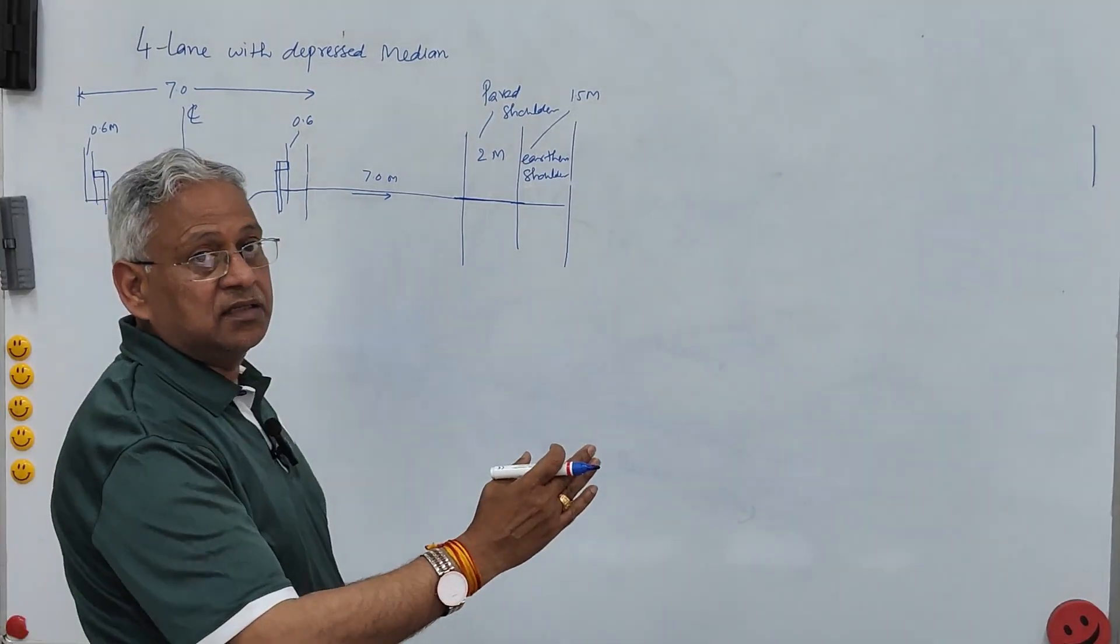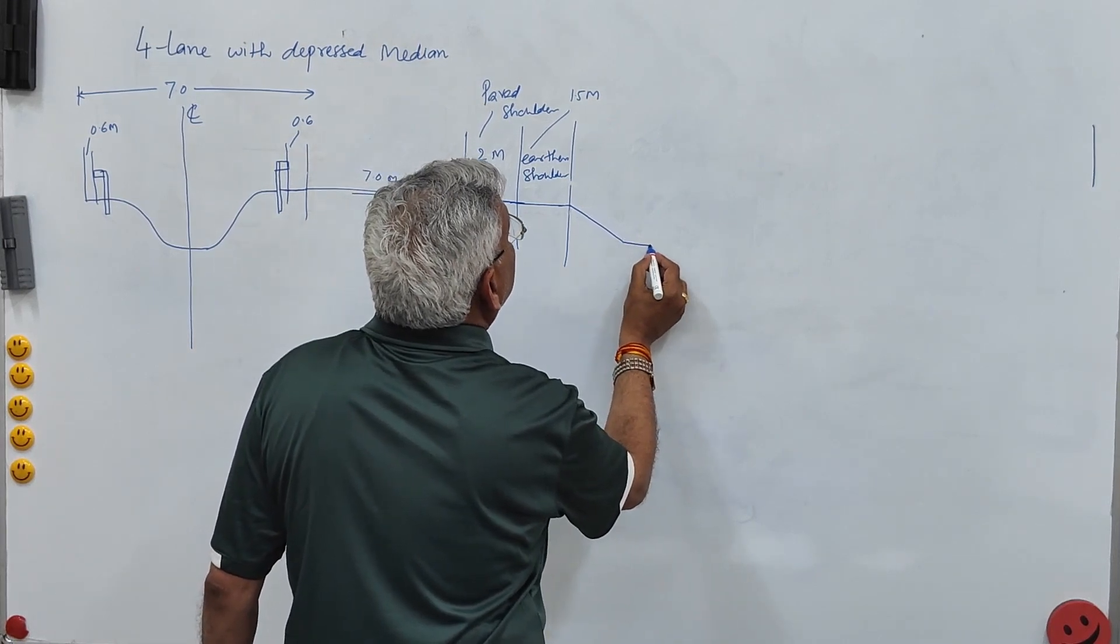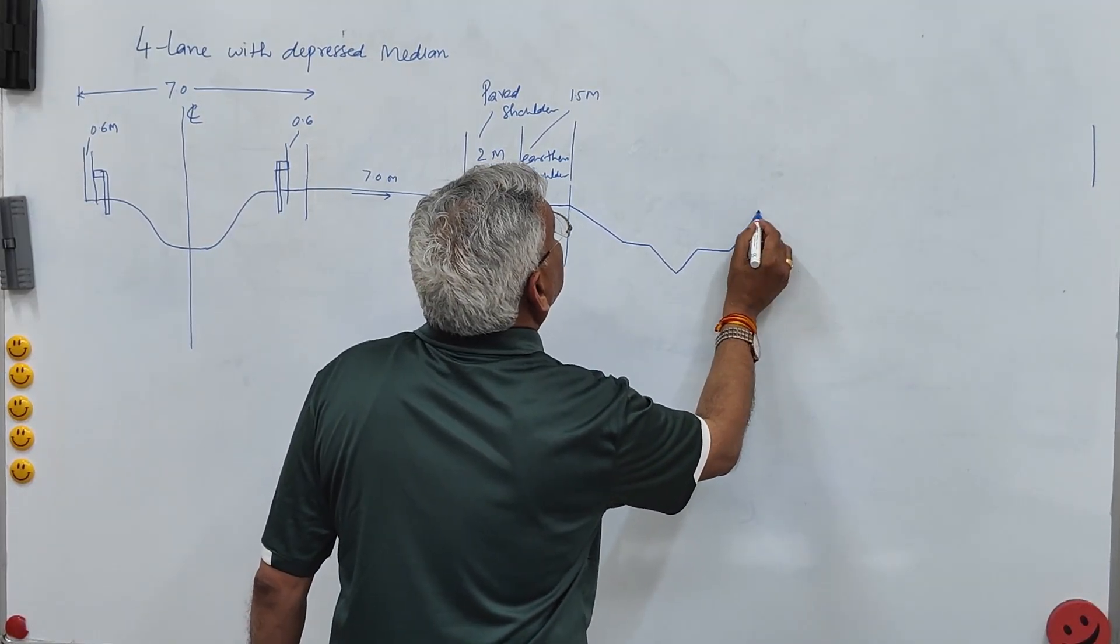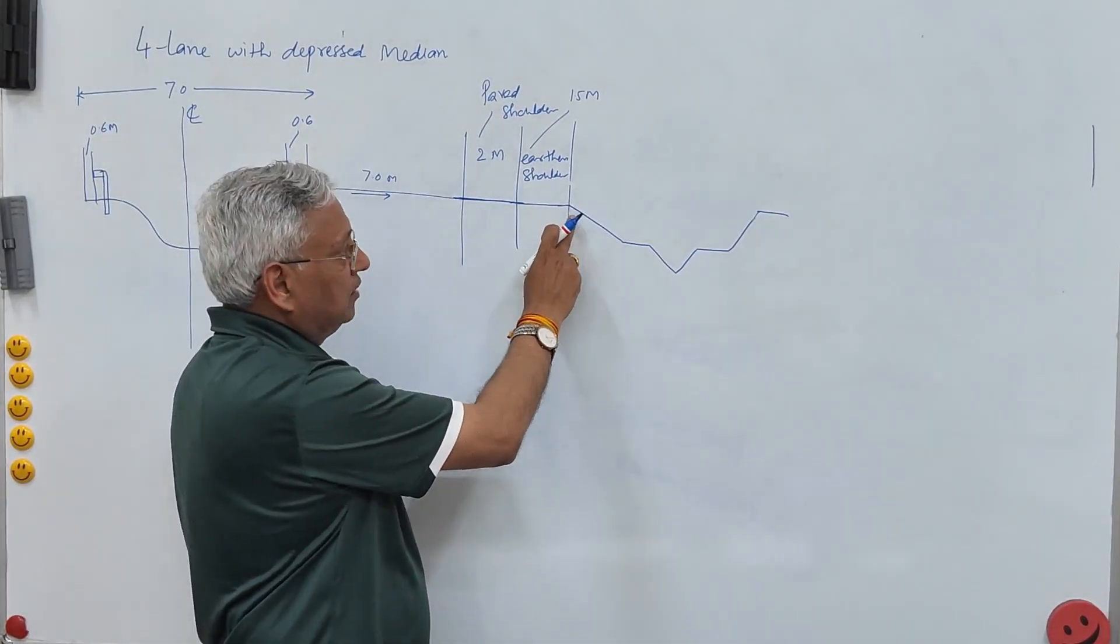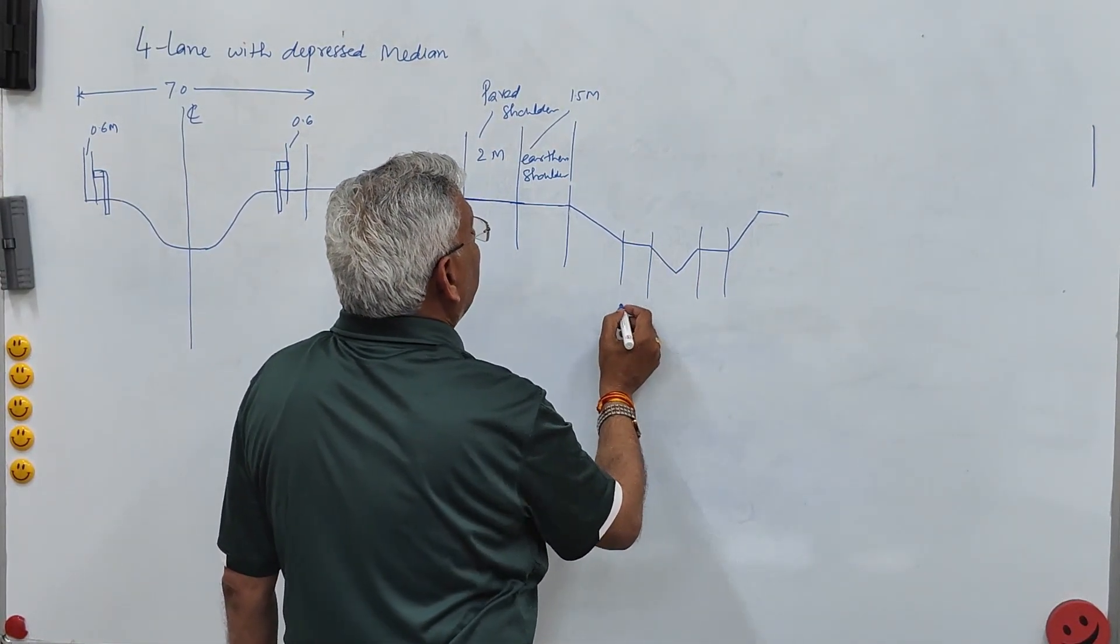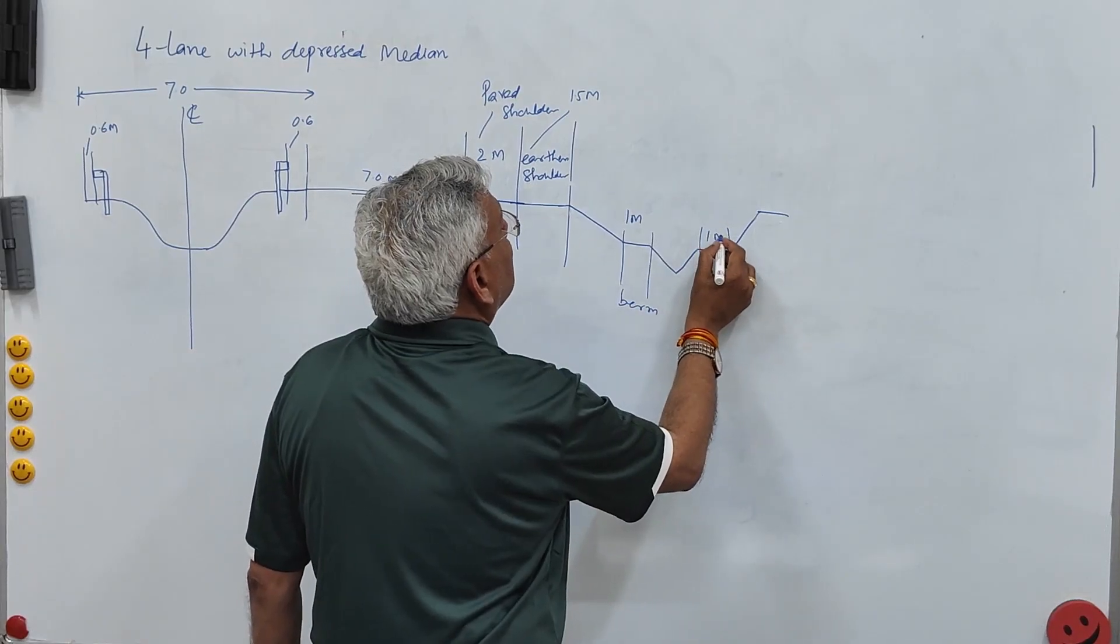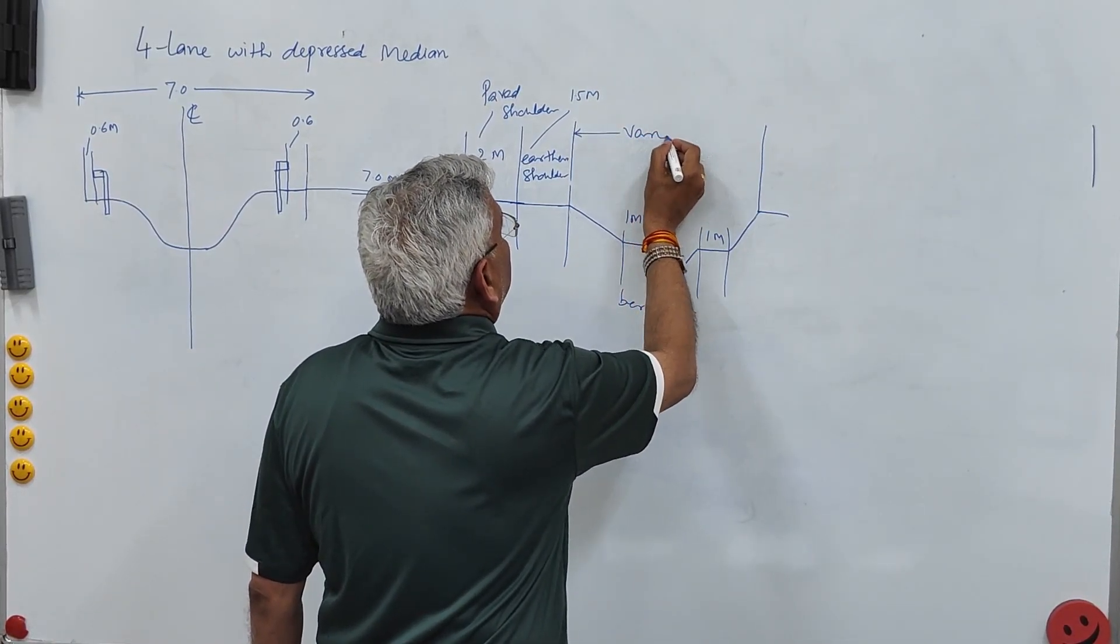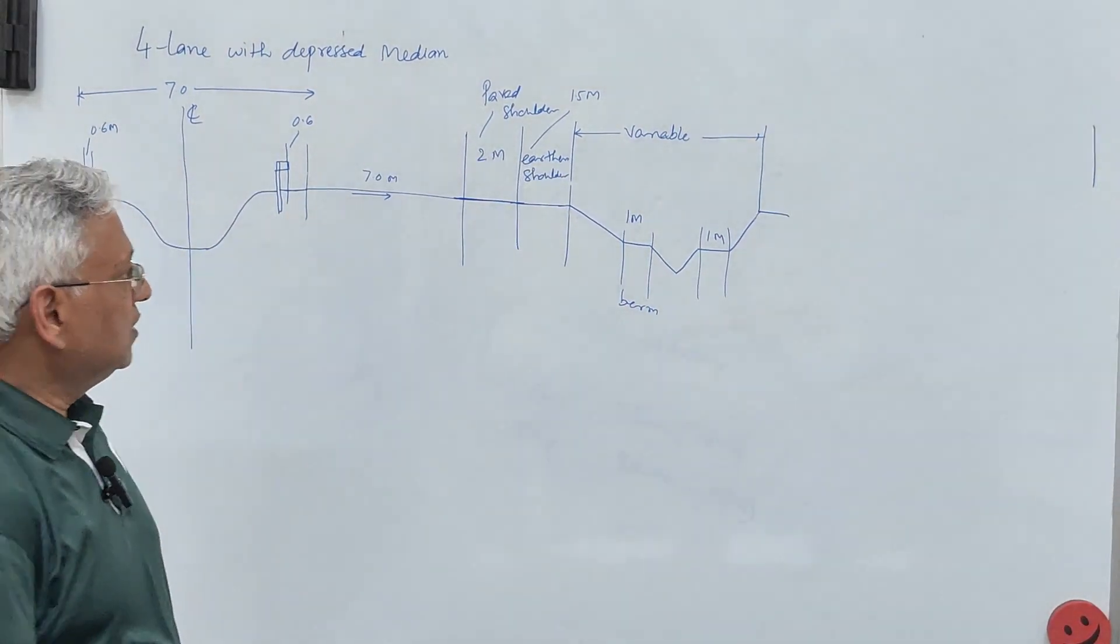Now next is to provide the drain. So this is the drain. So this is the drain let us say and this total distance will depend upon the height of amendment and this side slope. But here important point is that on either side of this drain we provide a berm of 1 meter. But this total is variable. It depends upon the height of the embankment. This is the drain.